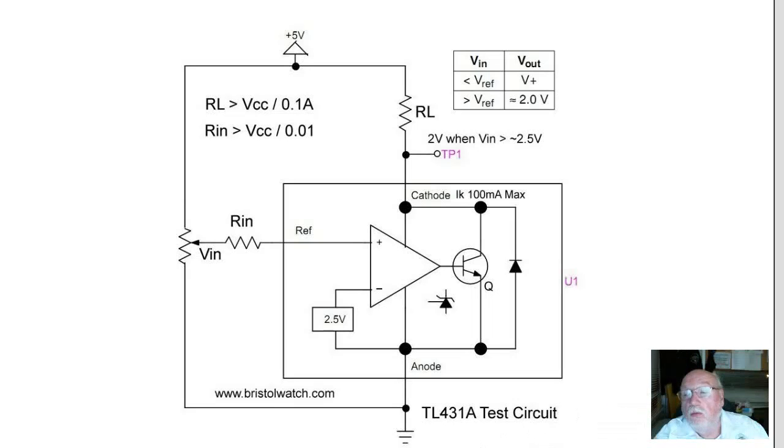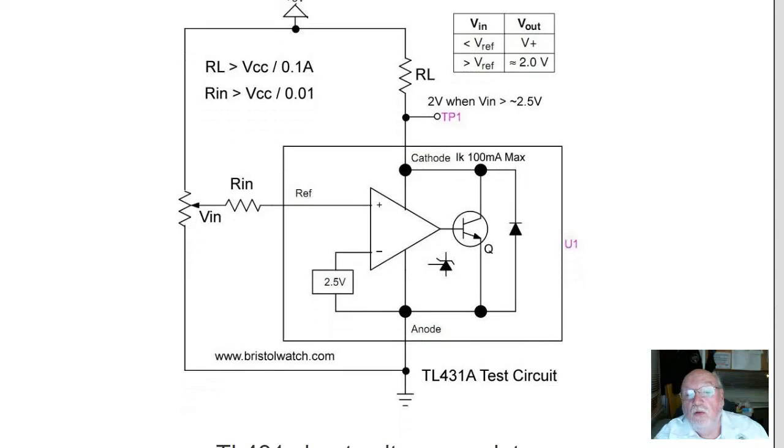Quickly again, remember that the TL431 is essentially a comparator circuit with a 2.5 volt reference. The 4.7K that I used in series with the pot would limit the current to ref.